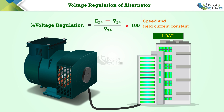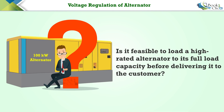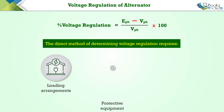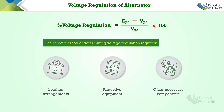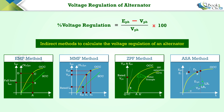The formula for calculating the voltage regulation of an alternator requires loading the alternator to its rated capacity. However, is it feasible to load a high rated alternator to its full load capacity? The answer is no, because it would require significant infrastructure that includes loading arrangements, protective equipment, and other necessary components.